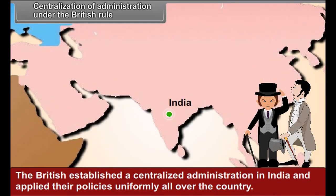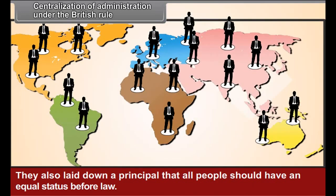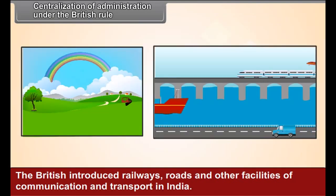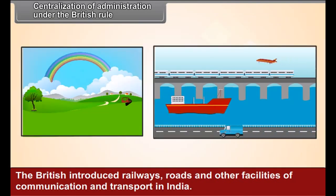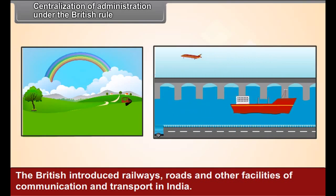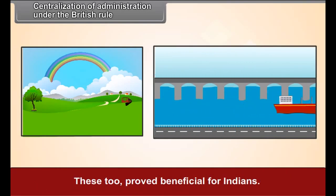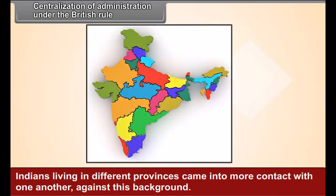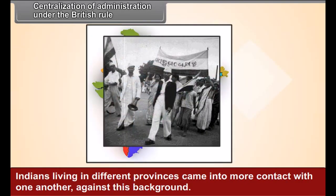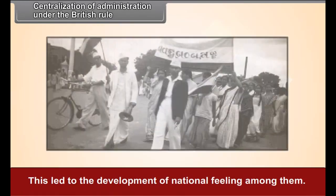Centralization of Administration Under British Rule: The British established a centralized administration in India and applied their policies uniformly all over the country. They also laid down a principle that all people should have equal status before law. The British introduced railways, roads, and other facilities of communication and transport in India. These proved beneficial for Indians — people living in different provinces came into more contact with one another, which led to the development of a national feeling among them.